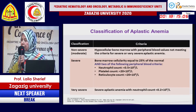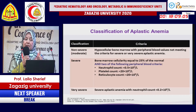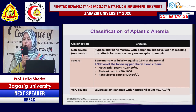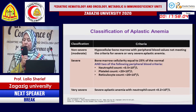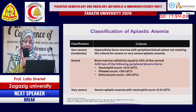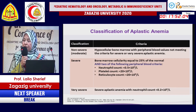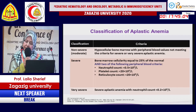Classification of aplastic anemia: severe aplastic anemia is defined by bone marrow cellularity less than or equal to 25%, in association with neutropenia less than 500, thrombocytopenia with platelets less than 20,000, and decreased reticulocyte count. Very severe aplastic anemia is defined by an absolute neutrophil count less than 200, and non-severe if these criteria are not met.